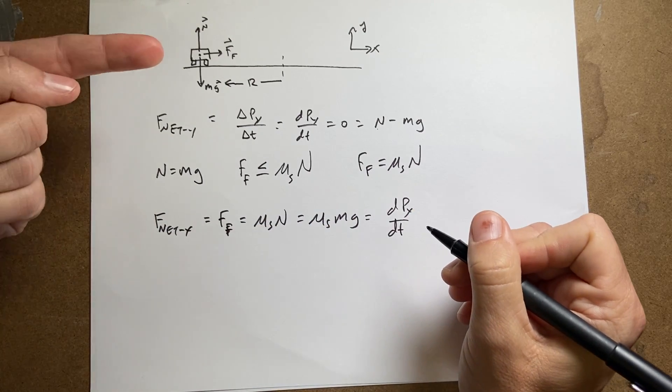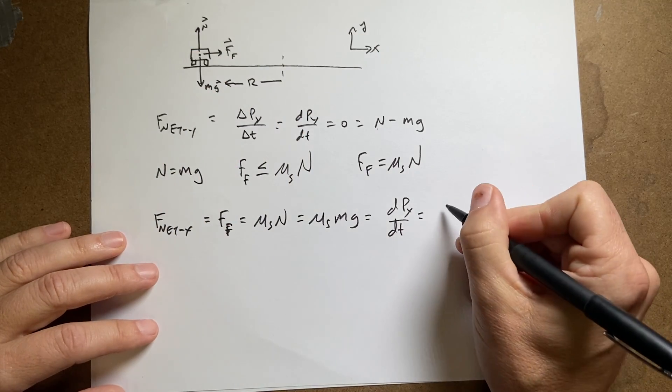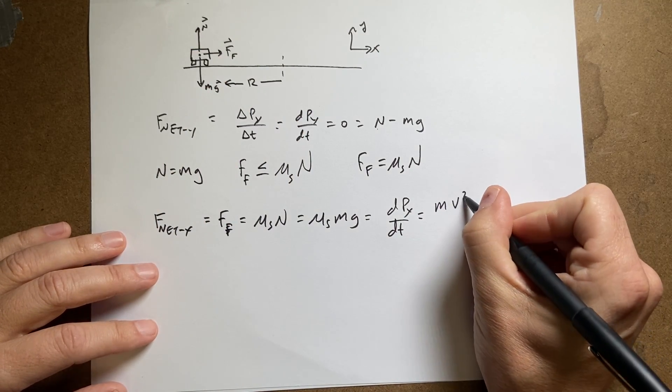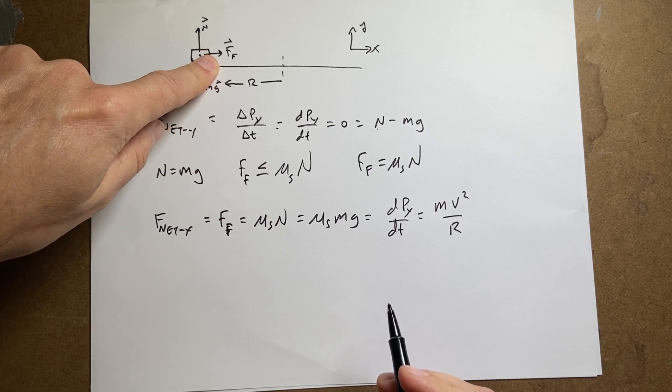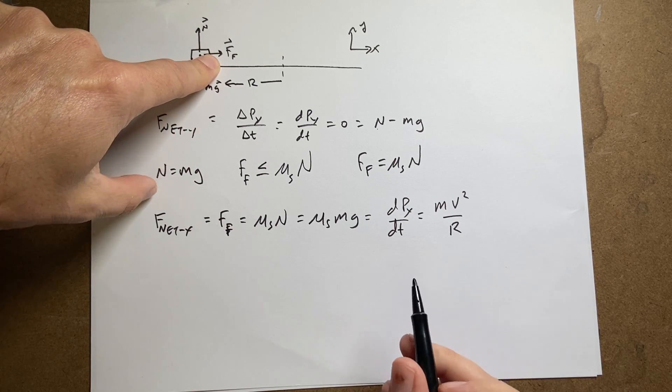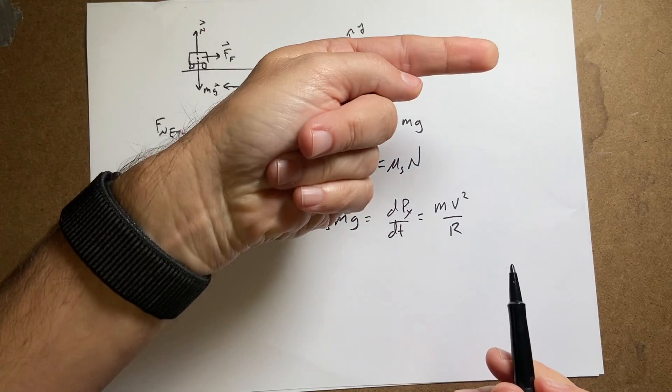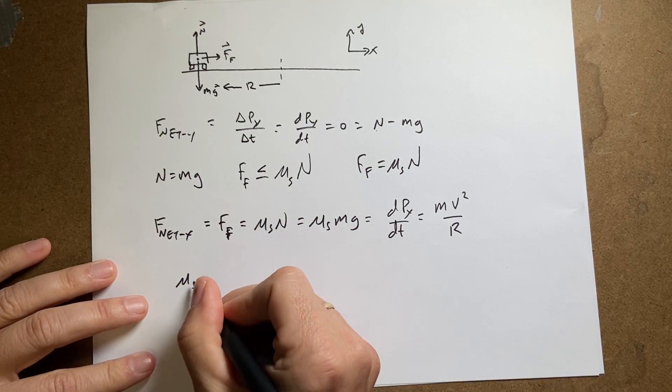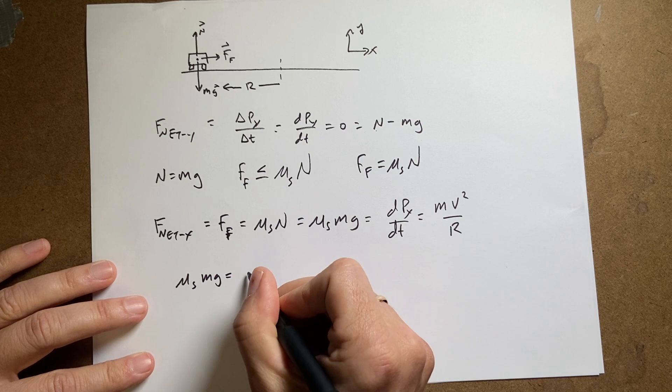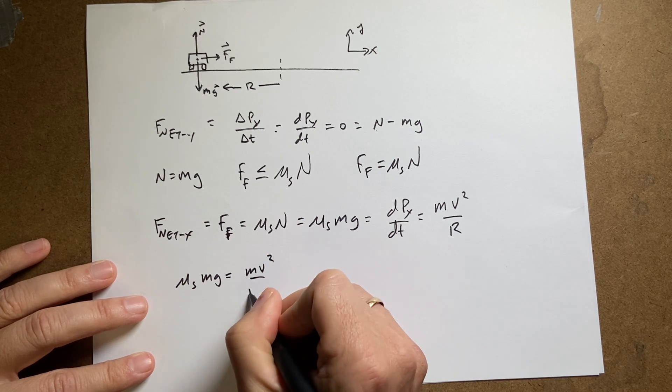At that instant it's accelerating this way. So I can write that as m v squared over r. Remember for an object moving in a circle, the change in momentum in the direction of the circle is m v squared over r. And that's towards the center of the circle. So now I can write this out.